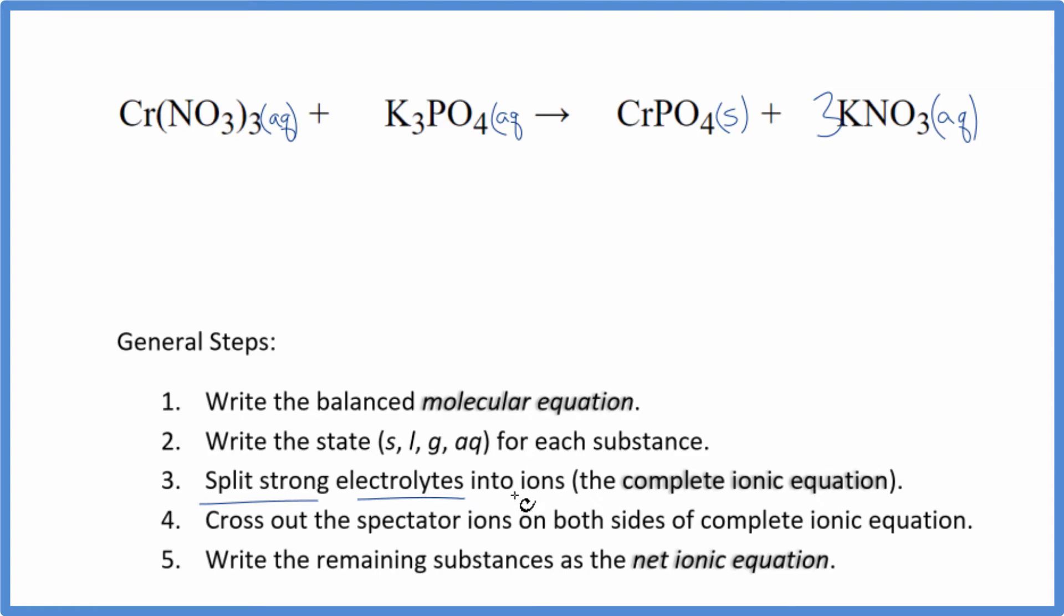Now we can split the strong electrolytes into their ions for the complete ionic equation. So chromium, we don't know. That's a transition metal. But this nitrate ion, the whole thing, is one minus. Since we have three of them, this has to be three plus. So we have the chromium three plus ion. And I'll write aqueous later. And then we have the nitrate ion here, but we have three of them.